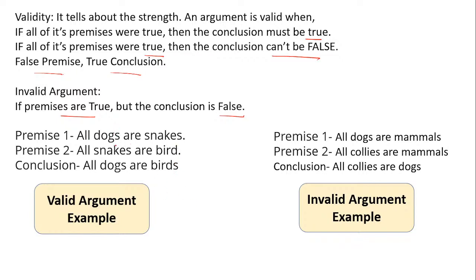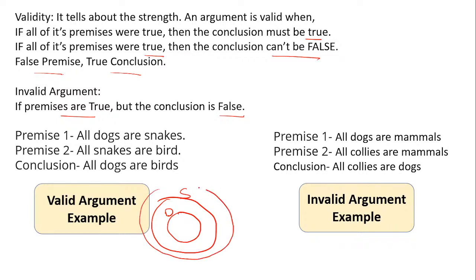For example: 'All dogs are snakes. All snakes are birds. Therefore, all dogs are birds.' Whenever you see the word 'all' with a subject, that circle is the smaller circle. So the dog circle is smaller inside the snake circle, and the snake circle is smaller inside the bird circle. When drawn in a Venn diagram, the dog circle falls inside the bird circle, so 'all dogs are birds' is valid — this is a valid argument.